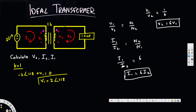The question asks us to find v2, and we have the relationship v2 equals 6·v1. So we multiply: v2 equals 6 times v1 equals 6 times 2∠118°, which gives us v2 equals 12∠118° volts.